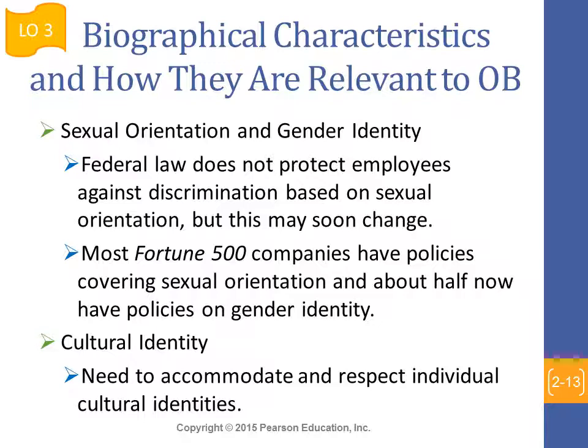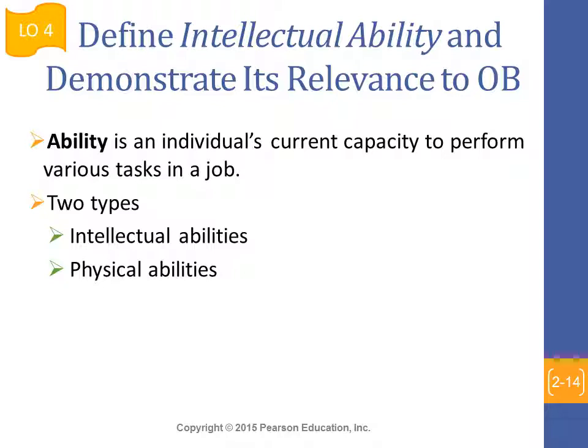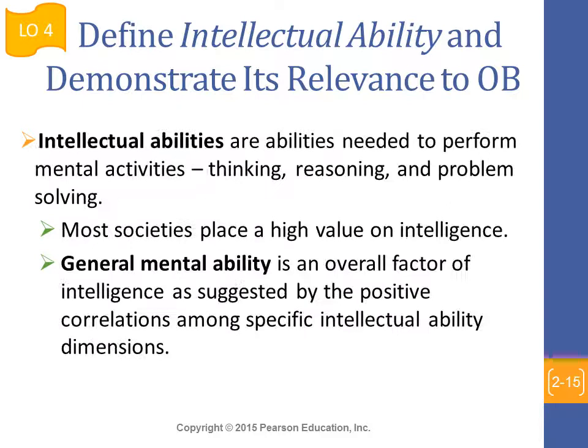Sexual orientation and gender identity are also discussed further in the book. Now, for the next several slides, we talk about ability. Ability is an individual's current capacity to perform various tasks in a job. According to the book, there can be two types of abilities: intellectual and physical. When we talk about intellectual abilities, we are primarily looking into thinking, reasoning, and problem solving. Most societies place a high value on intelligence, and people will be paid higher compensation for the intellectual workforce.